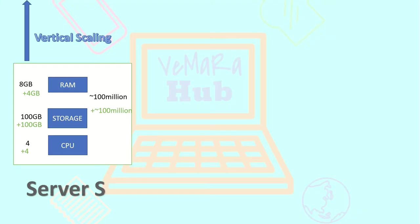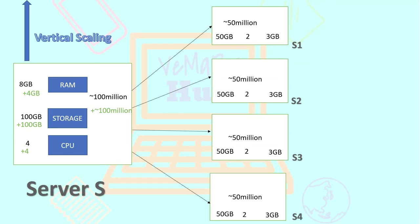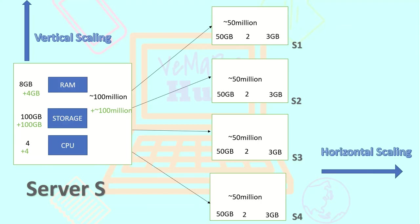Now consider another situation: if you have four small machines with smaller configurations, you can divide your 200 million documents across each of these servers such that each server holds only around 50 million documents. By dividing the data into multiple servers you have reduced the computation required. Such kind of scaling is known as horizontal scaling, which is what is known as sharding in MongoDB.